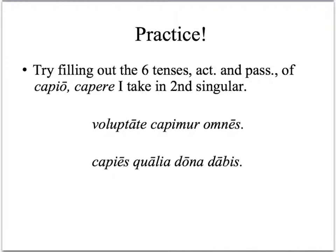For practice, take the blank sheet and fill in the six tenses active and passive of the indicative for 'capio, capere' in the second person singular. Be sure to complete the dictionary entry of the verb and fill out the top of the sheet before you begin. Then, for a little extra, see if you can translate each of these proverbs.